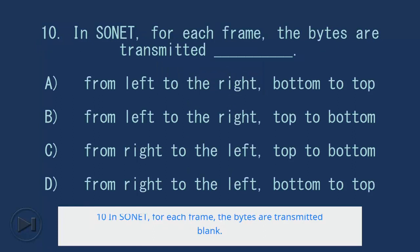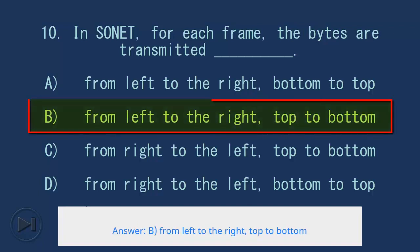10. In SONET, for each frame, the bytes are transmitted blank. A. From left to right, bottom to top, B. From left to right, top to bottom, C. From right to left, top to bottom, D. From right to left, bottom to top. Answer: B. From left to right, top to bottom.